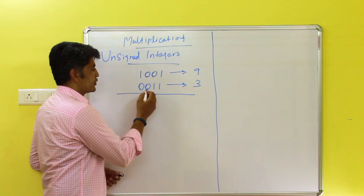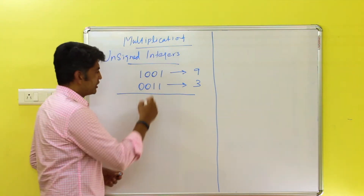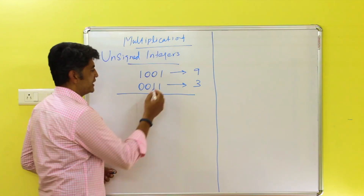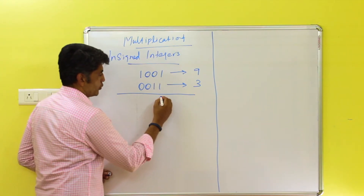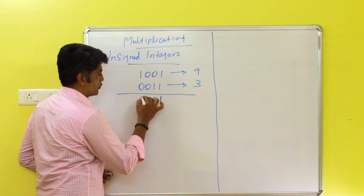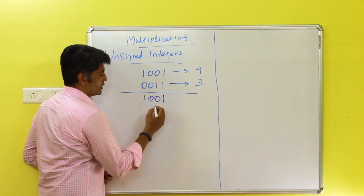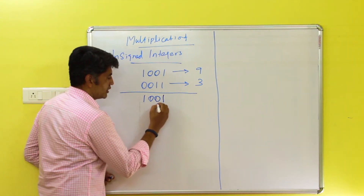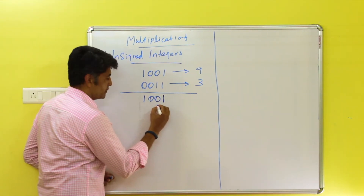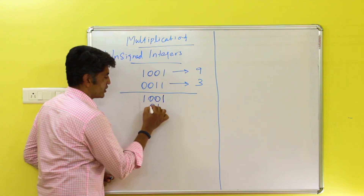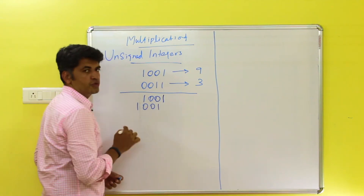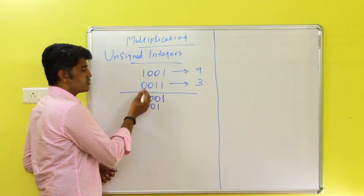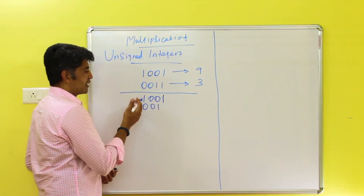So 1001 is 9, and 0011 is 3. Multiplying using partial products: first, multiply 1001 by the first bit (1), giving 1001. Then shift one position and multiply 1001 by the second bit (1), giving 1001 shifted. For the third and fourth bits, which are 0, there is no value — they give no contribution.